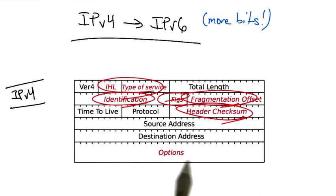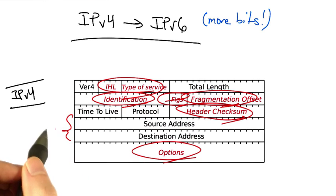Here's a picture of the IPv4 protocol header, and all of the fields shown in red have basically been removed in IPv6, resulting in both a much simpler header and addresses that are much larger.